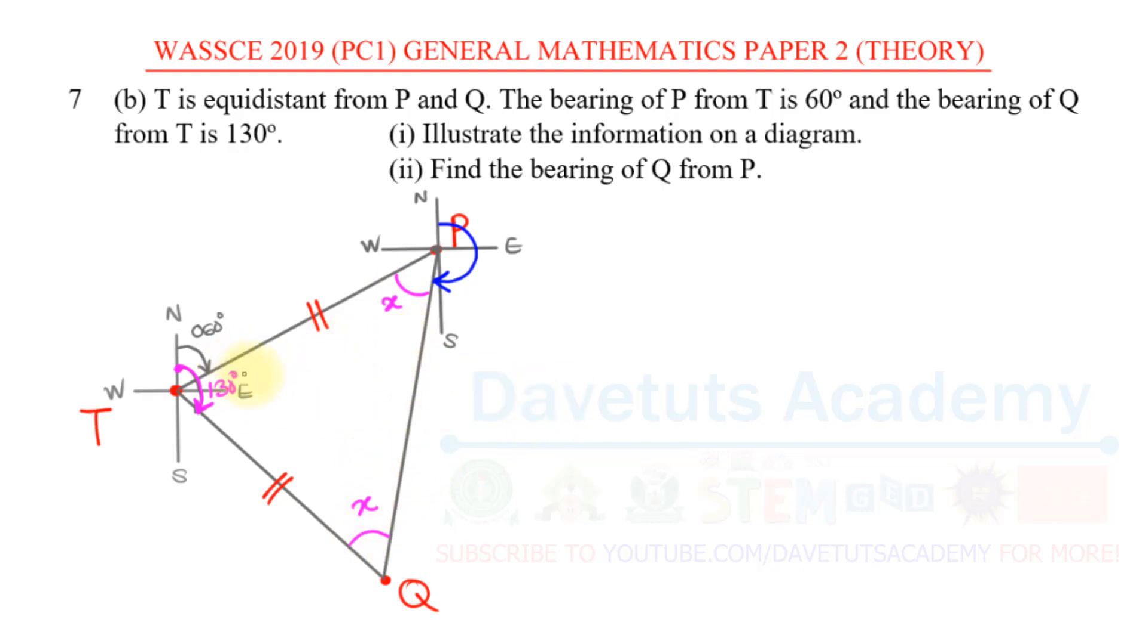Now look at the point T that we are coming from. Already we have known that from the north to the inclination of P from T is 60 here. The difference between the two here will be 130 minus 60. Because from north to here is 130, from north to here is 60. So we just subtract the two to get the angle here, and that will be 70 degrees.